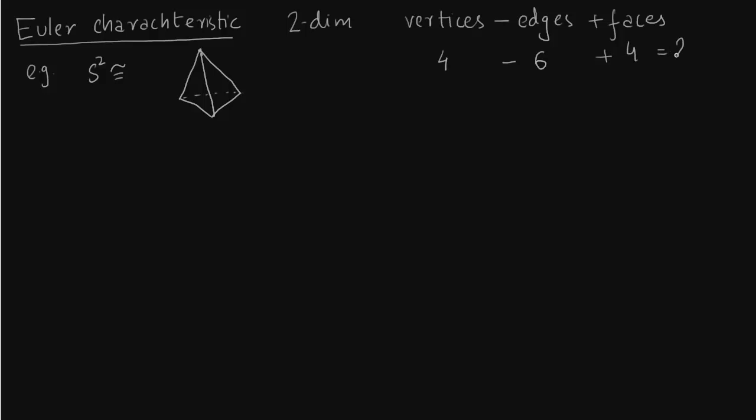So we want to generalize this as above. So we will write Euler characteristic χ(X) as summation over i equals 0 to n of (-1)^i dim H_i(X), or a₀ minus a₁ plus a₂ and so on with alternating signs. This is number of vertices, dimension of C₀. This is number of edges, dimension of C₁. This is dimension of C₂. A₃ is dimension of C₃.